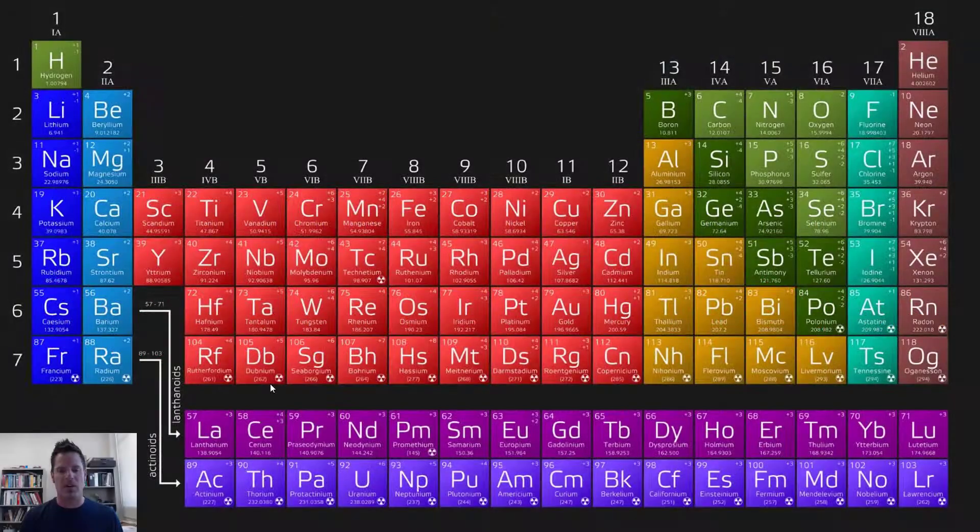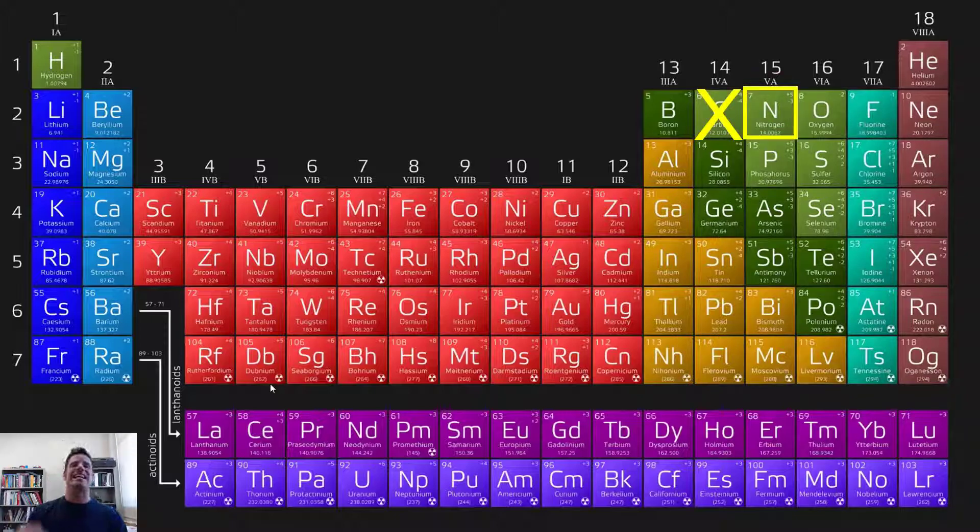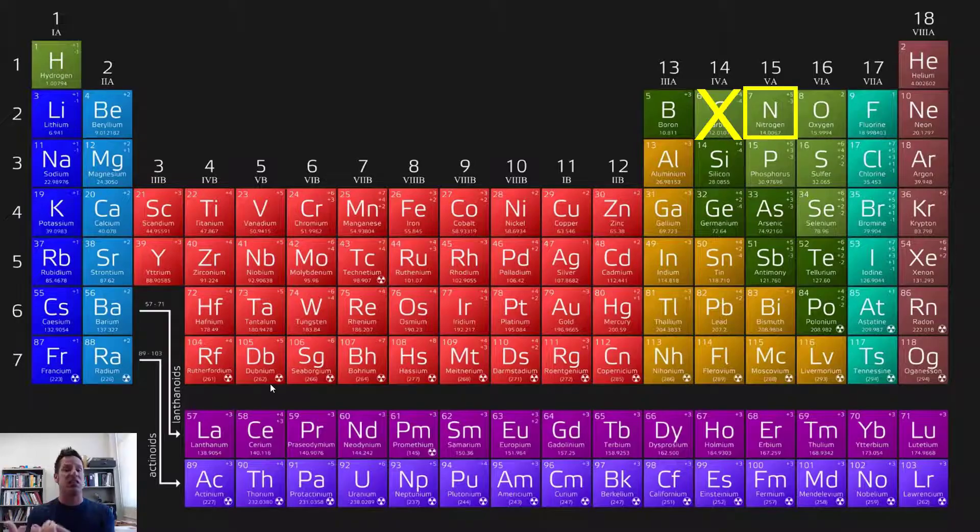If we somehow changed the number of protons in a carbon atom to be 7, then it would no longer be carbon. It would now become nitrogen. You see, we cannot change the number of protons in an atom without changing its identity to be that of a different element.